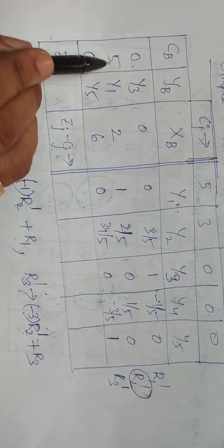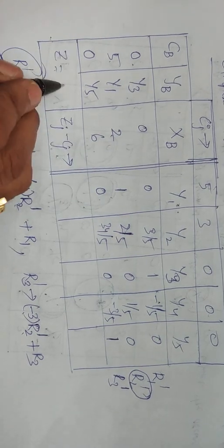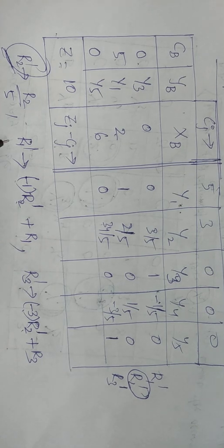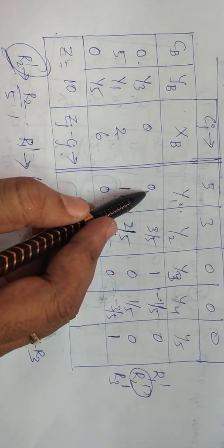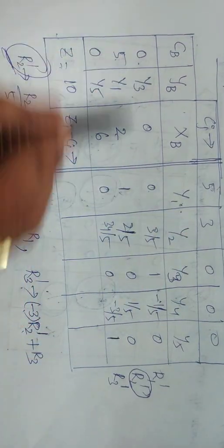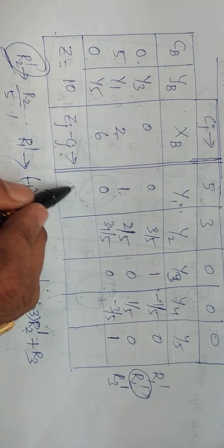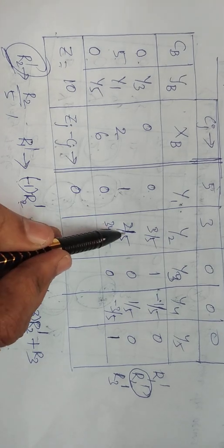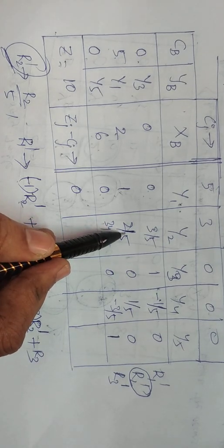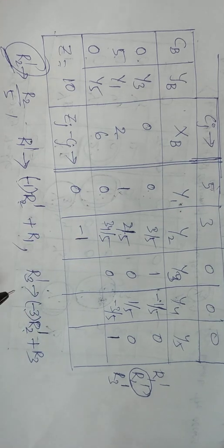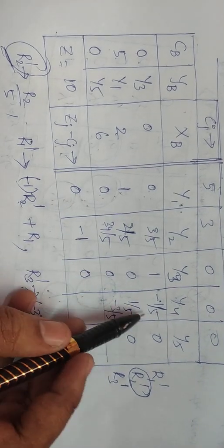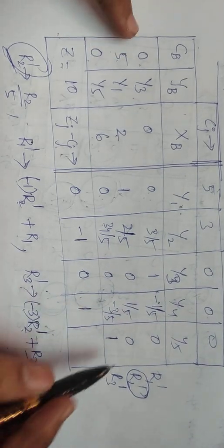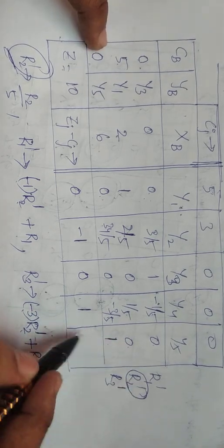Z = 0×0 + 5×2 + 0×10 = 10. For ZJ − CJ: for Y1, it is 0×0 + 5×1 + 0×0 − 5 = 0. For Y2: 5×(2/5) = 2, then 2 − 3 = −1. For Y4: 5×(1/5) = 1, then 1 − 0 = 1. For Y5 and Y3: 0. So in Simplex Table 2, Z = 10, and ZJ − CJ values are 0, −1, 0, 1, 0.